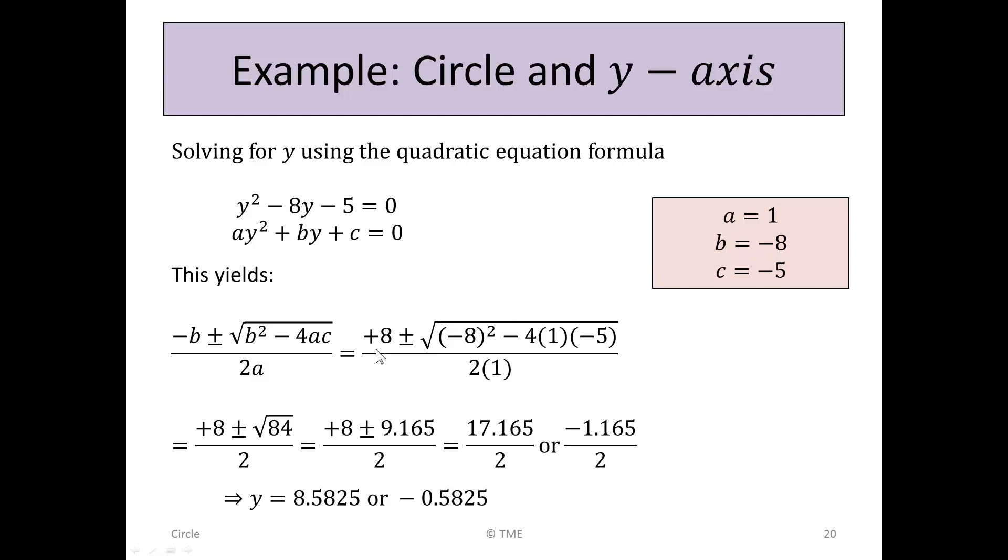We simply substitute the values. So b is -8, so -b would be +8, plus or minus the square root of (-8)² - 4(1)(-5). On the bottom we've got 2(1). So we now work on the arithmetic. The +8 comes down. -8 × -8 is 64, 4 × 5 is 20, minus by minus gives us plus, so 20 + 64 gives us √84. On the bottom, 2 × 1 is 2.